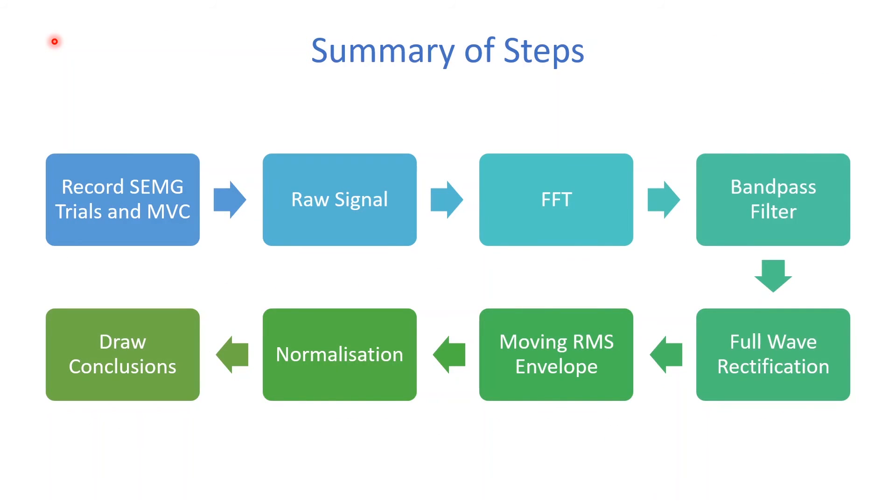Alright, so those were the general steps for processing an SEMG signal. Just to recap, you would start off by recording your surface electromyography trials with the maximum voluntary contraction. And the MVC can simply be found by asking the subject to contract that particular muscle with as much strength as possible. Based on this, you would obtain the raw SEMG signal. And this can be used to find the fast Fourier transform to obtain the cutoff frequencies for your filter. You can then run the signal through a bandpass filter, followed by full wave rectification. And then calculate a moving RMS envelope, which would show the mean power of the signal. This can then be normalized in relation to the MVC. And appropriate conclusions can then be drawn.